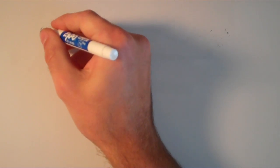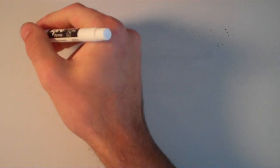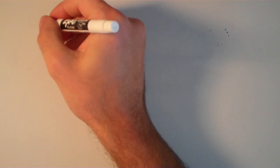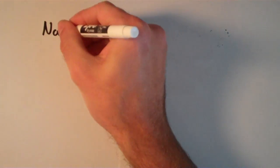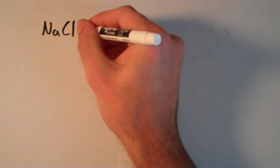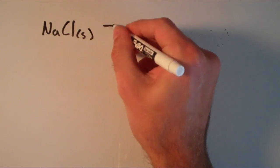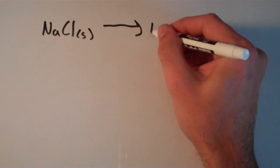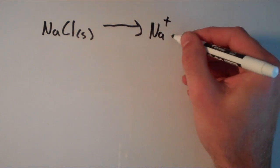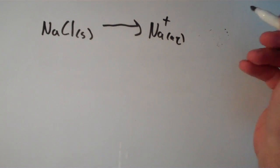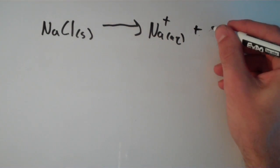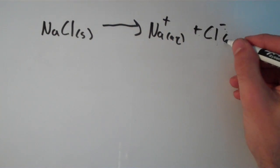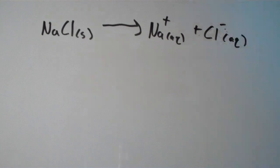Now suppose I have an ionic compound such as sodium chloride, NaCl, and this is a solid. If I dissolve that in water, that's going to give me Na+, a sodium ion, which is aqueous, and it's also going to give me a chloride ion, Cl-, which is also aqueous.